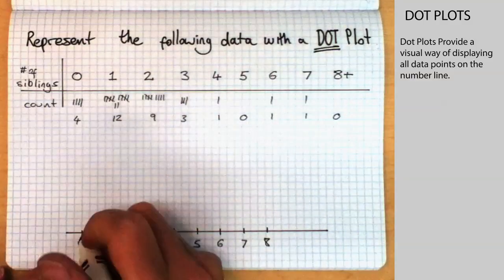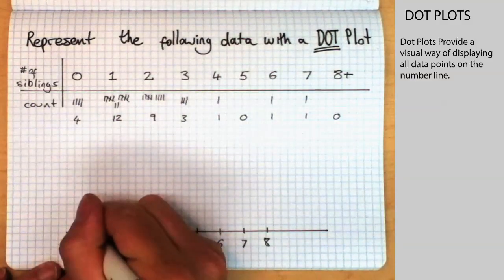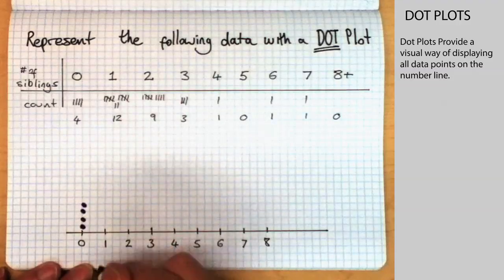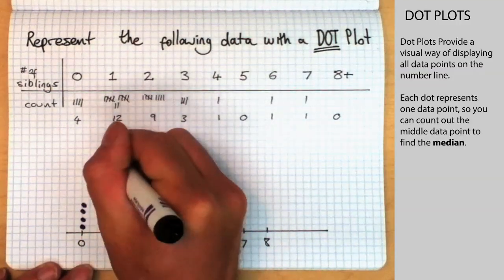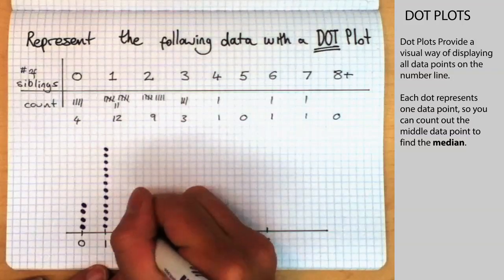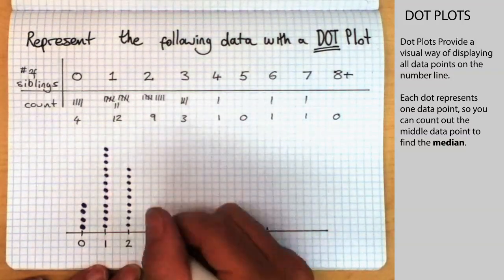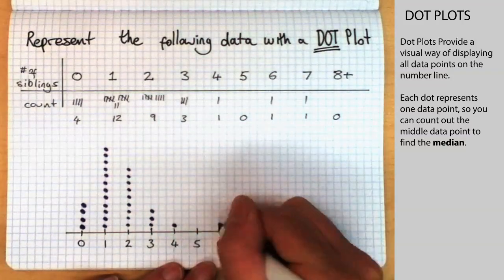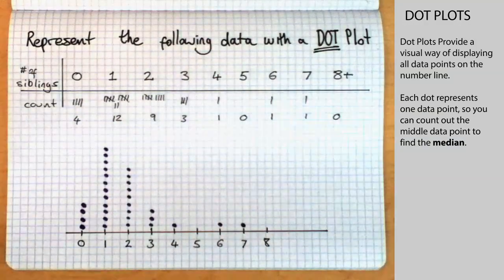We just start putting dots on wherever we need to. Four dots at zero. Twelve dots at one. Nine dots at two. Three dots at three. A dot at four. Nothing at five. A dot at six and seven. And that's our dot plot there.